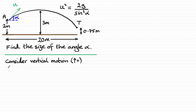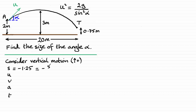I'm going to list the SUVAT variables: s, u, v, a, and t. Now s is displacement — you have to be careful here because the displacement from A to T is a negative displacement. It's gone from 2 meters down to 0.75 meters above the ground, so that's a drop of minus 1.25 meters, which I'll write as minus 5 over 4.